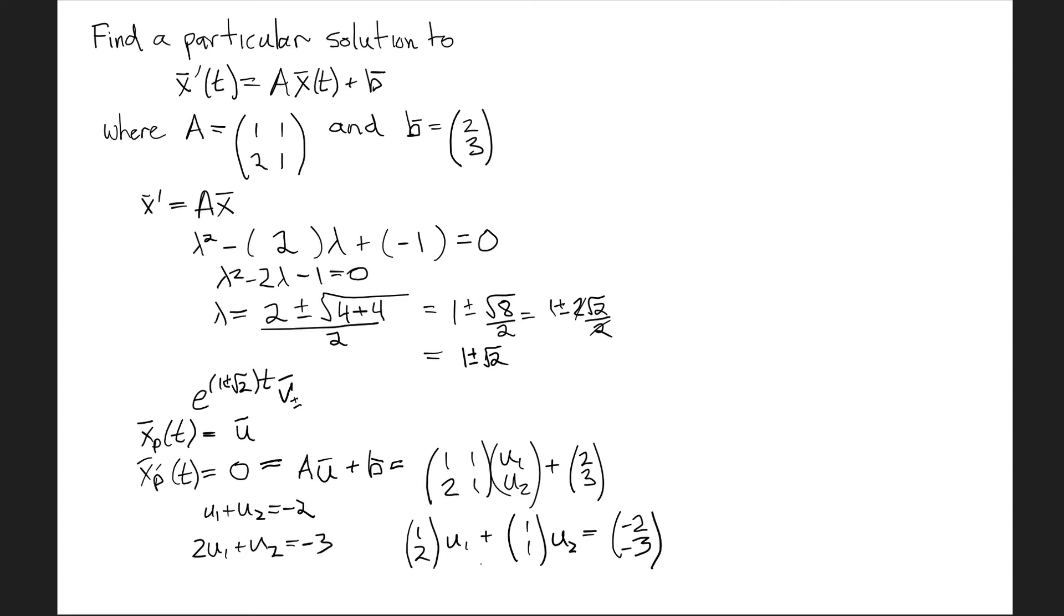The reason I've written it like this is because you can now see that this is column 1 of matrix A, this is column 2, and I'm trying to find constants u₁ and u₂ to make a linear combination of the columns that equals -B. If the columns of A are independent, and they are here, then we know any other vector can be written as a linear combination of those.